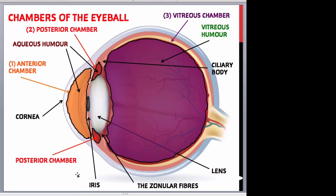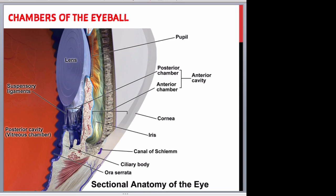Normally, aqueous humour is replaced on average every 90 minutes. In this close-up cross-sectional view of the eye you can clearly see the three chambers in relation to the lens, the zonular fibres (labelled here as suspensory ligaments), the ciliary body and the cornea. The posterior chamber and anterior chamber are together referred to as the anterior cavity, while the posterior cavity is the vitreous chamber. You can also see the canal of Schlemm into which the aqueous humour drains through the trabecular meshwork.